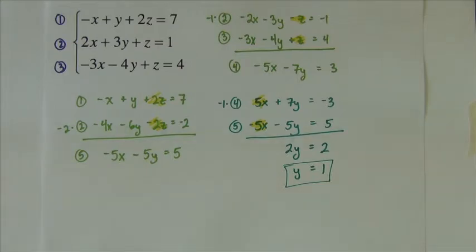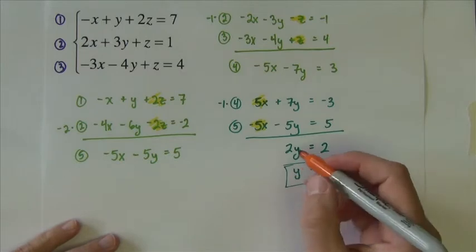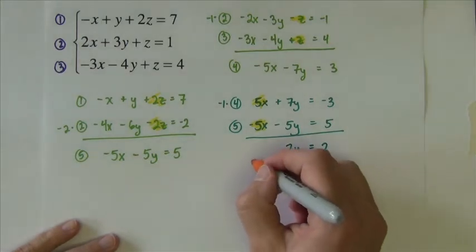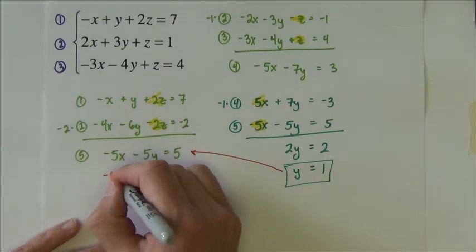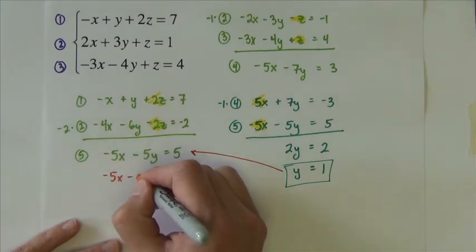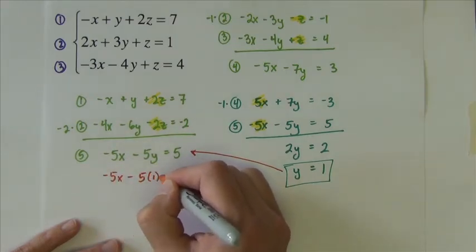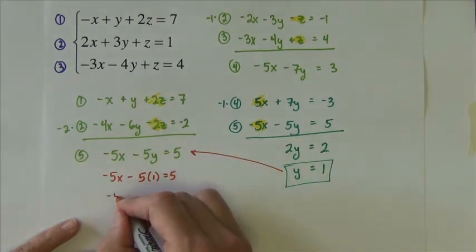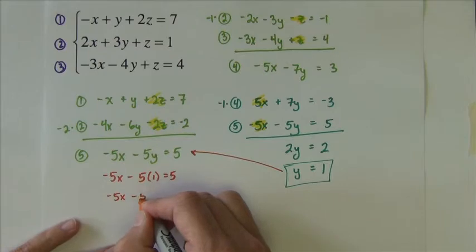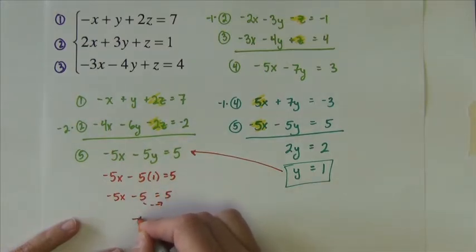From here we need to start substituting back to find the rest of the solutions. Let's put the 1 right here for y. So negative 5x minus 5 times 1 equals 5. That's a negative 5x minus 5 equals 5. I'm going to add that over. So negative 5x equals 10. So x equals negative 2.